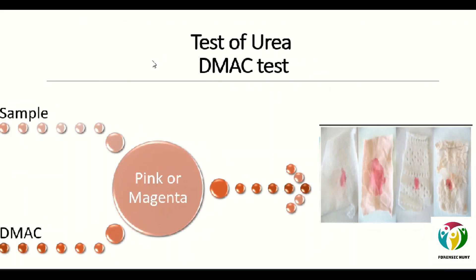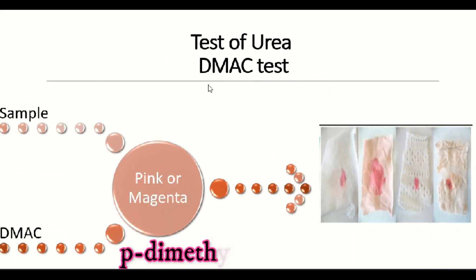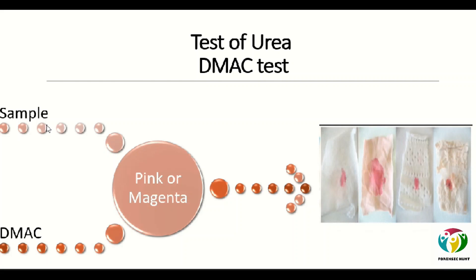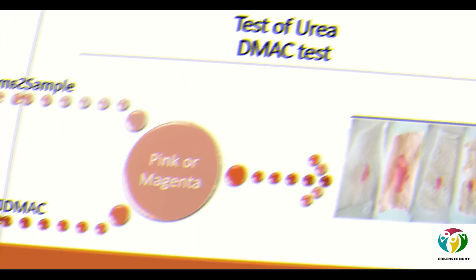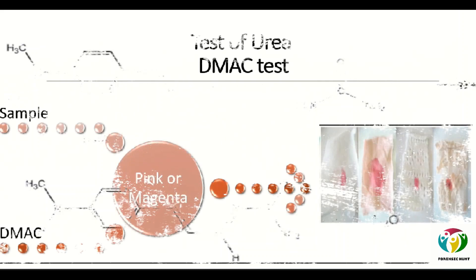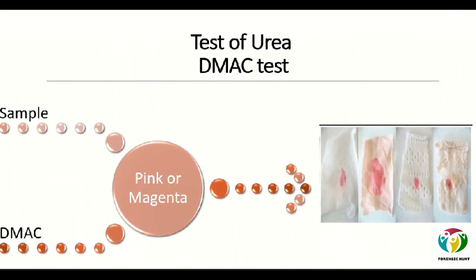The next test for urea is the DMAC test. DMAC is para-dimethylaminocinnamaldehyde. You take the sample along with DMAC and there will be production of a pink or magenta color. The procedure: transfer the sample to wet filter paper containing DMAC solution, wrap it in aluminium foil, let it sit overnight, and observe under a 473 to 548 nanometer wavelength light source or under such a wavelength filter. A pink or magenta color indicates the presence of urea in the sample.